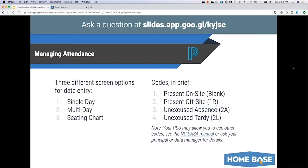The seating chart view lets you design your own custom layout seating chart. You can use it to take attendance, print it for a sub, or whatever you might need. On the code options: the present on-site code is new this year — it's the blank default. It used to just be 'present,' now it's 'present on-site.' If they're present off-site, you set 1R, and of course you still have your unexcused absence and unexcused tardy — 2A and 2L. Your school's data manager may allow you to enter other codes. There are 13 or 14 state-approved attendance codes; these four are the ones teachers are most commonly allowed to use.